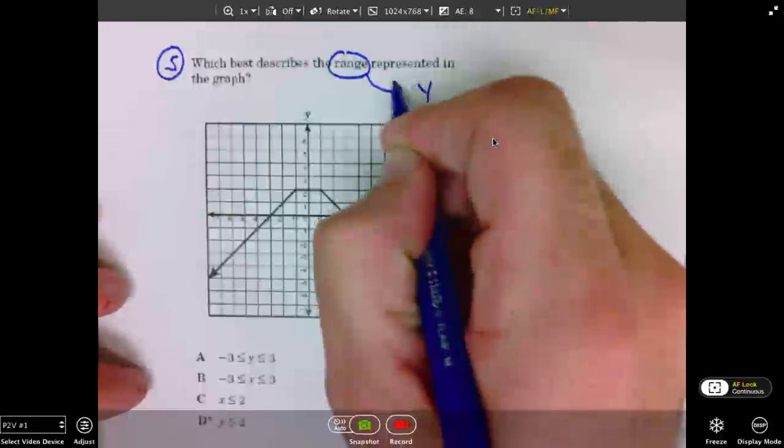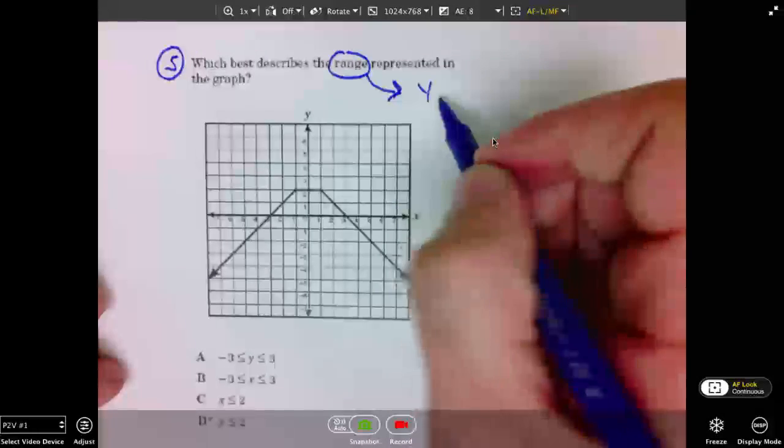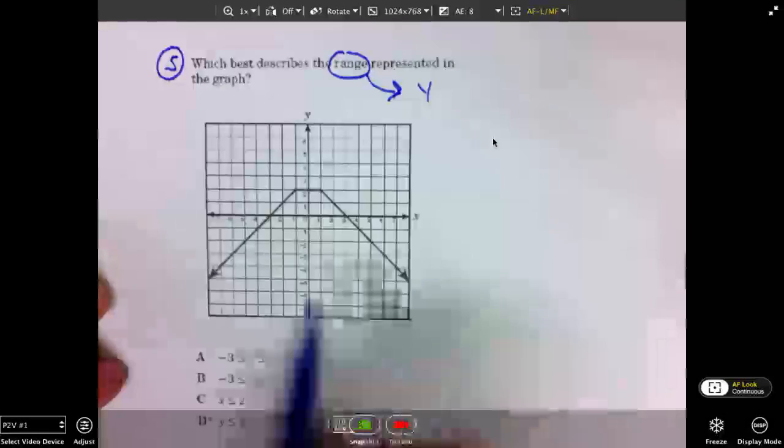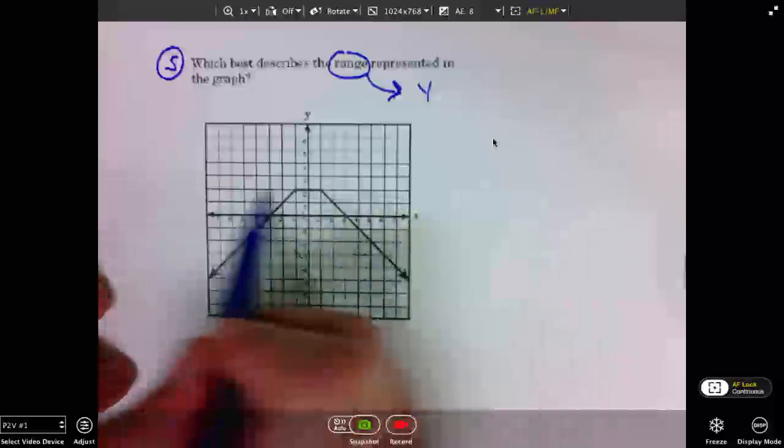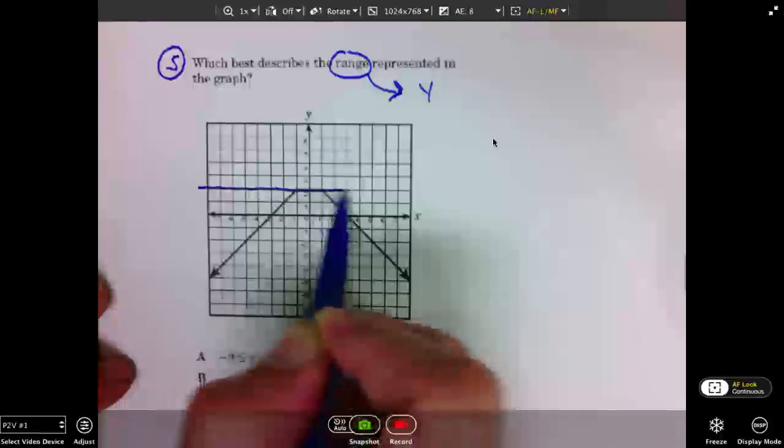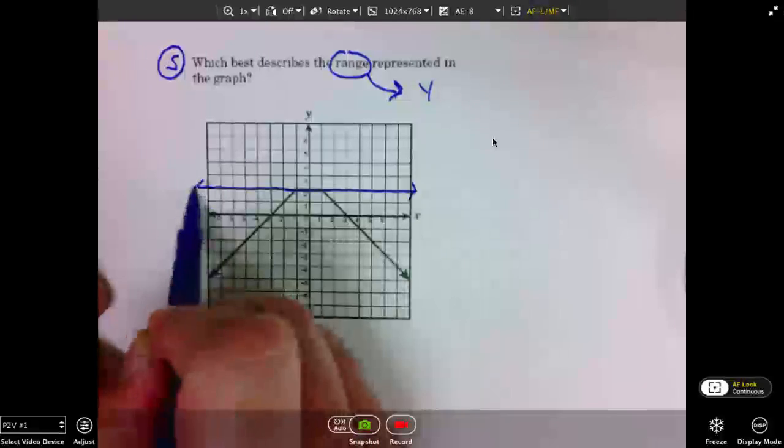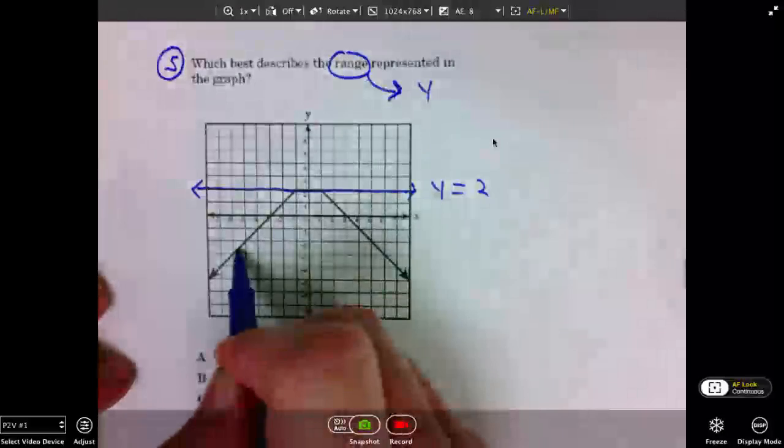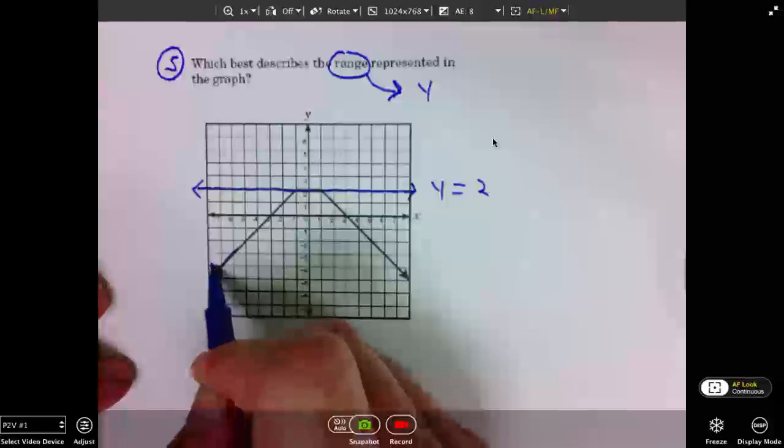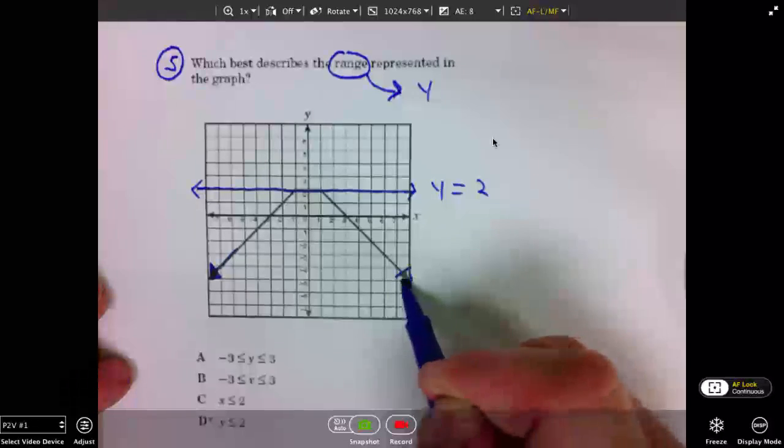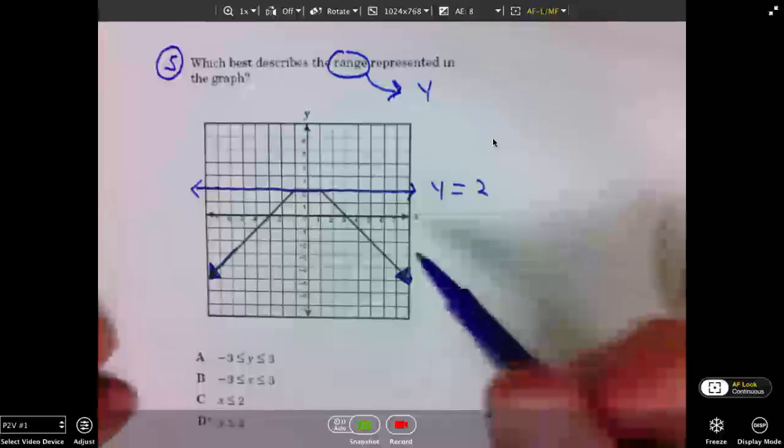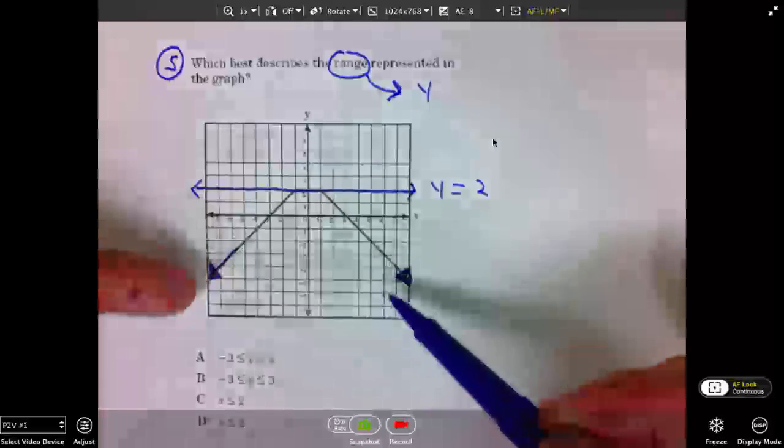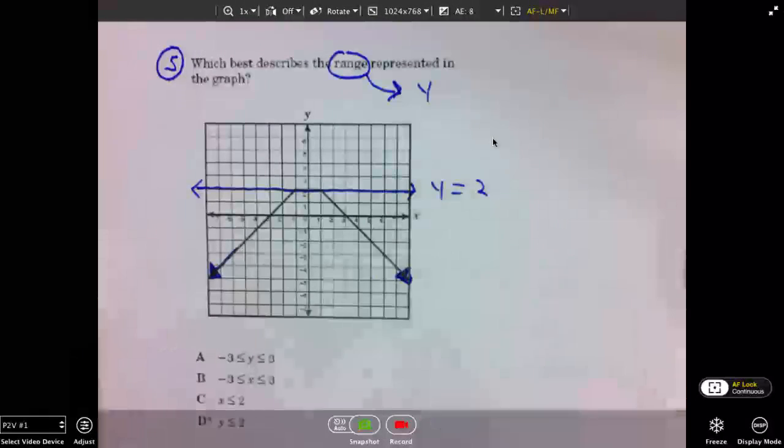So, we will consider the vertical minimum and maximum of this graph. This is the top of the graph. This is a Y value of 2. And, as you can see, the graph extends infinitely downward. So, 2 is our maximum Y value, and the rest of the Y values go down.